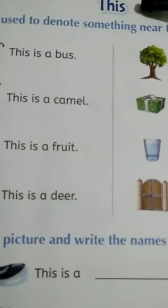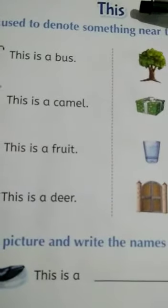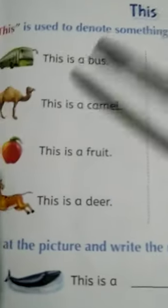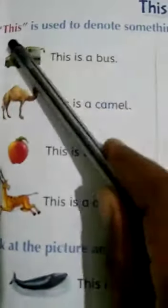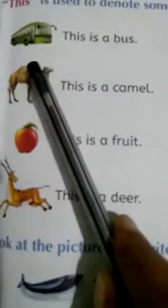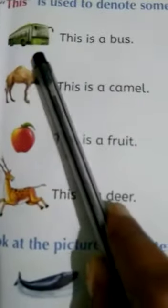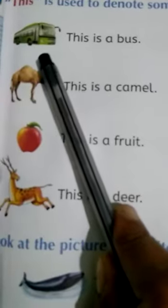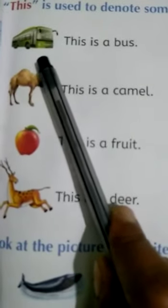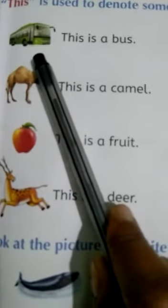T-H-I-S, this. This means 'idu'. This is used to denote something near to us. Namaage hathiradal iruwa vasthugadana nao heilwee kithre makla, this use maart thivii.